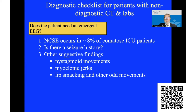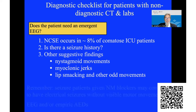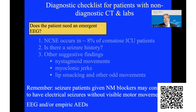Does the patient need an emergent EEG? Non-convulsive status epilepticus accounts for approximately 8% of comatose ICU patients. Does the patient have a seizure history, nystagmoid eye movements, myoclonic jerks, lip smacking, or other odd movements? If non-convulsive status epilepticus is suspected, get an EEG. Portable EEGs sent electronically for remote reading are increasingly available in the emergency department. Remember: if you give neuromuscular blockers to intubate a seizure patient and use a long-acting paralytic, external seizure motions will cease but electrical epilepsy can continue — so get an EEG or treat empirically with anti-epileptic drugs.